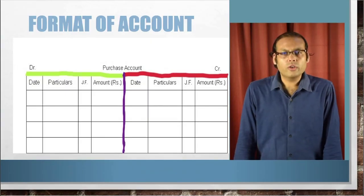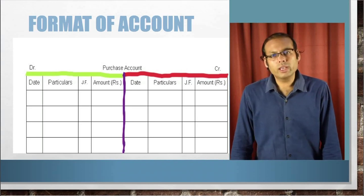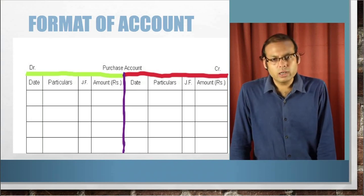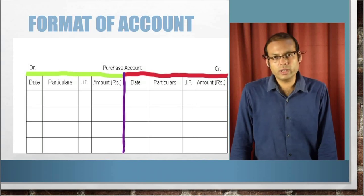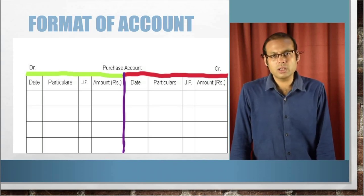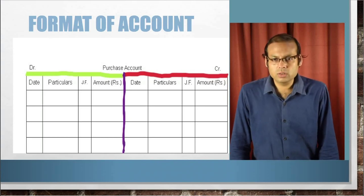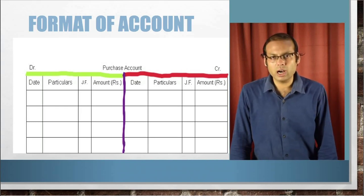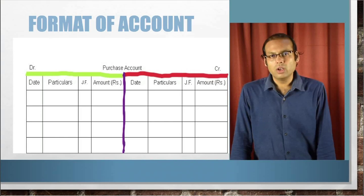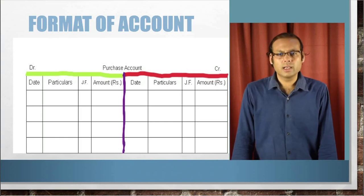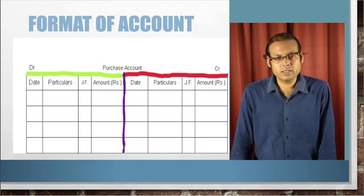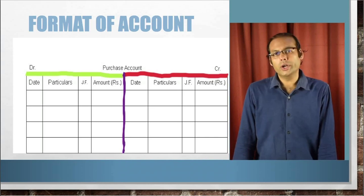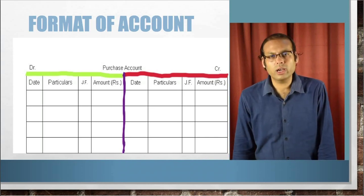Now let us go to the format of account. Generally, we keep records in this particular format. Here we have written: date, particulars, JF, amount — and the same columns are recorded on the other side as well: date, particulars, JF, amount. So there are two sides of an account. This is the particular format we follow in recording the transactions.